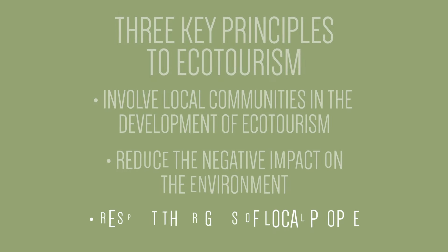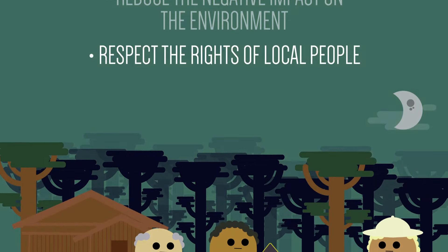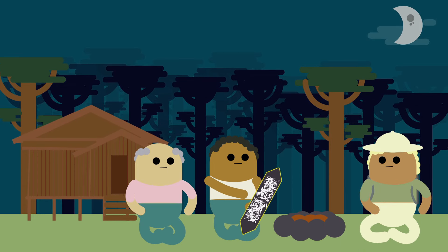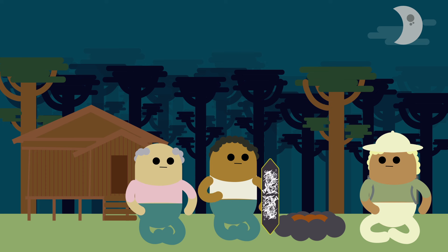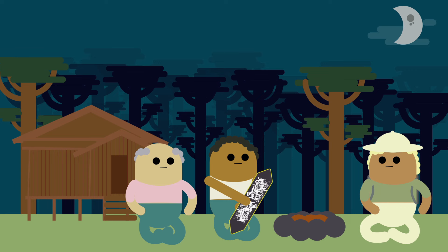The third principle is to respect the rights of local people. Many tourists visit a location in order to learn about local cultures and traditions. The people with the greatest knowledge about a destination are the people who actually live there, and ecotourism ventures should be managed by local communities using their experiences and expertise to promote local cultures and traditions.